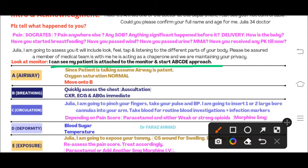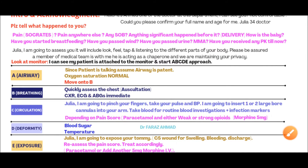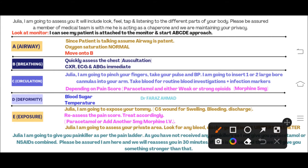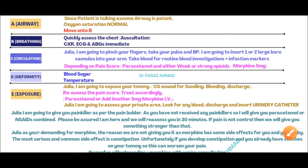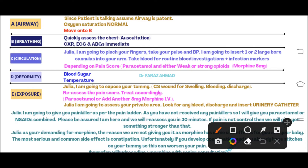Say: 'I can see my patient is attached to the monitor, so I am going to start an A-to-E approach.' In this post C-section pain station, the airway will be patent, but you must verbalize: 'I am going to check the airway — since my patient is talking to me, I assume the airway is patent.' Look at the monitor and confirm oxygen saturation is normal, then move to B. For Breathing, do auscultation of the chest — don't waste time on inspection, percussion, or palpation as this is not a respiratory case.